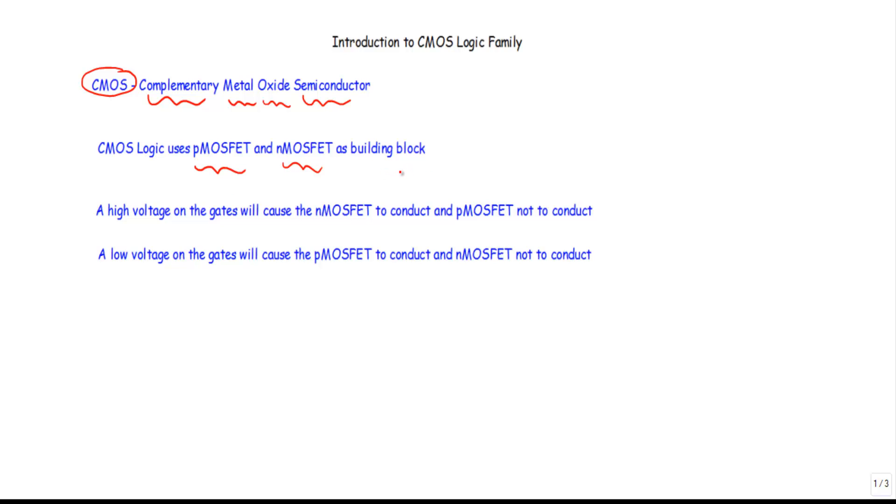The great advantage of CMOS logic is that they allow no current flow and no power to be consumed except when the inputs of the logic gates are being switched. CMOS accomplishes this by complementing every n-type MOSFET with a p-MOSFET and by connecting gates and drains together.